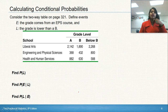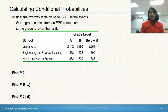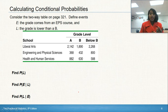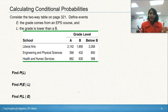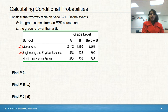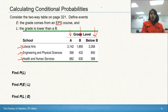We have a two-way table from page 321. There were 10,000 students at some university who received course grades that semester — meaning they got an A, a B, or below a B, but not no-credit or withdrawal. Of these 10,000 students, some belong to the Liberal Arts College, Engineering and Physical Science (EPS), or Human and Health Services College. They were categorized by whether they got an A, a B, or below a B in their class.